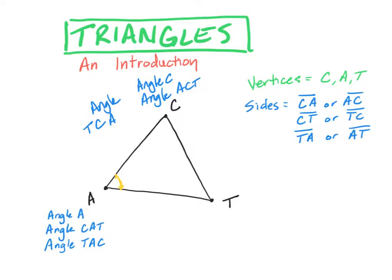So those are just some quick ideas of naming angles. Along with naming angles, we can also name the triangle whatever we want as long as we use those three vertices. So we can call it triangle CAT.